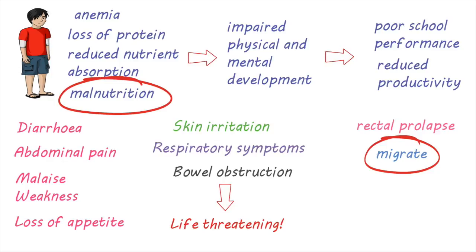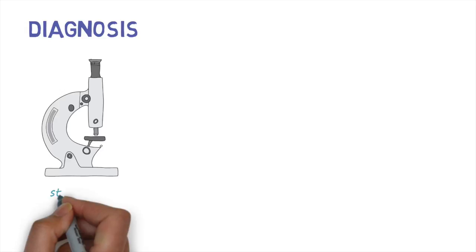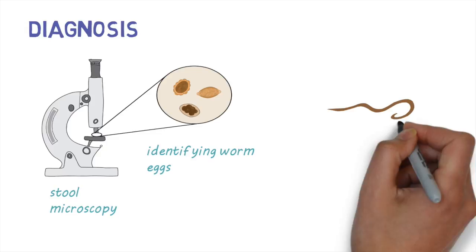Infections are usually diagnosed by examining stool samples under the microscope and identifying eggs. Sometimes worms can be passed in feces and are large enough to be seen — worms such as Ascaris can grow up to 35 centimeters long.